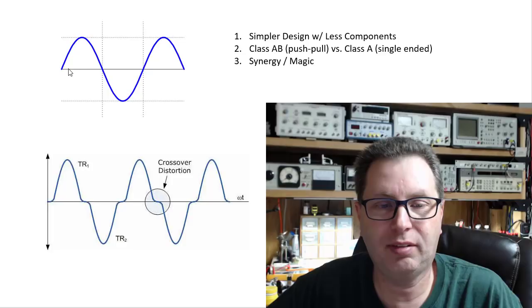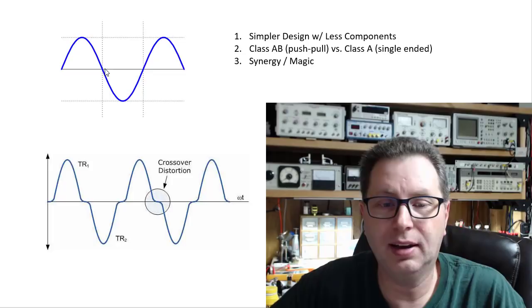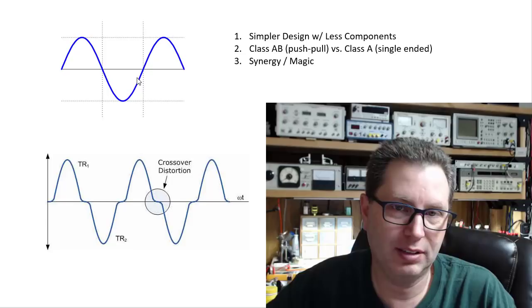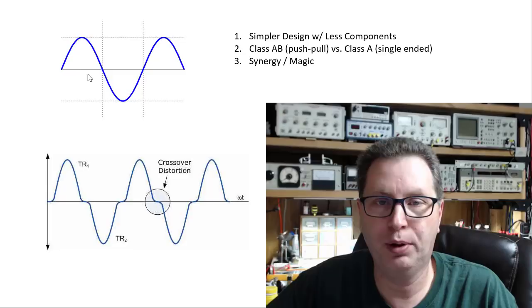You send the positive peaks to one set of tubes in your output or an output tube, and you send the negative peaks here to another tube in your output. So each of those tubes then is running at what is considered 50% duty cycle. So you can drive these things harder and you can get more power out of them because they're not turned on 100% of the time. The problem is when you break this signal apart and then amplify it, you've got to put it back together at some point to send to the speaker.